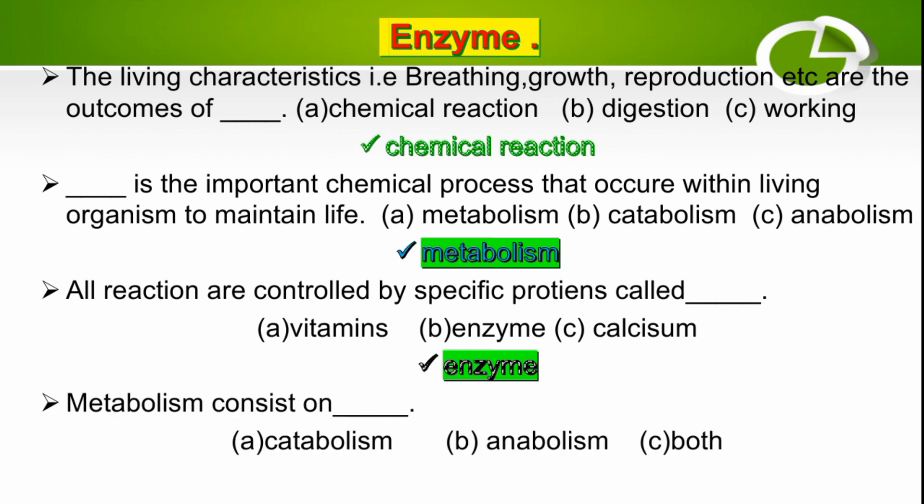Metabolism consists of catabolism and anabolism. The options are catabolism, anabolism, or both, and the right option is both.